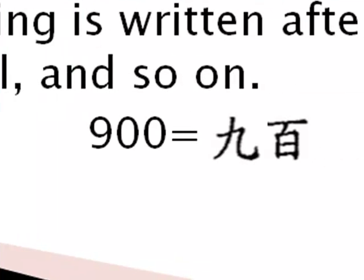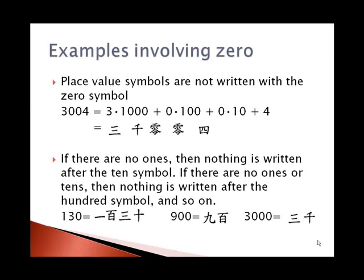If there are no ones and also no tens, such as in nine hundred, we don't need to write the final zeros there. It reads nine hundred. Similarly, if we have no ones, tens, or hundreds, we just write the end with the thousands. So three thousand looks like three, and then the symbol for a thousand.